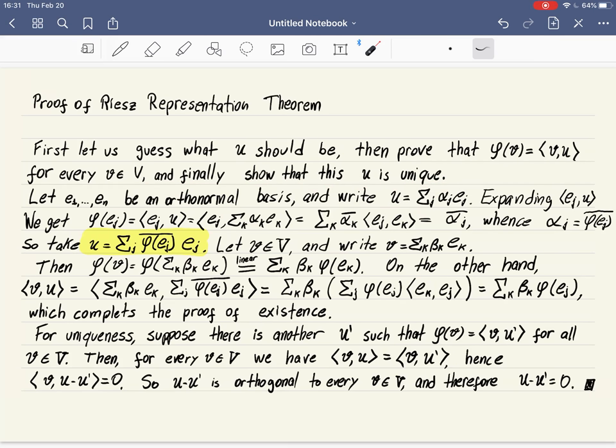The first part: we know that every finite dimensional inner product space has an orthonormal basis. So take one, call it E1, E2, ... EN. And being a basis means this vector U that we are after, whatever it is, can be written as a linear combination of alpha_J times E_J. And now, to find what these alpha_J's have to be,